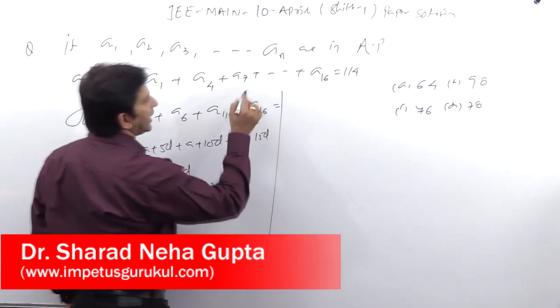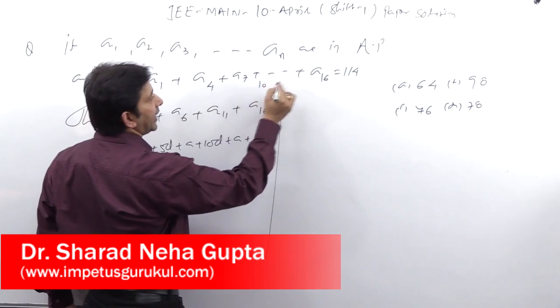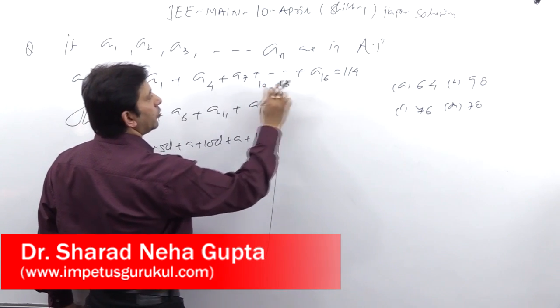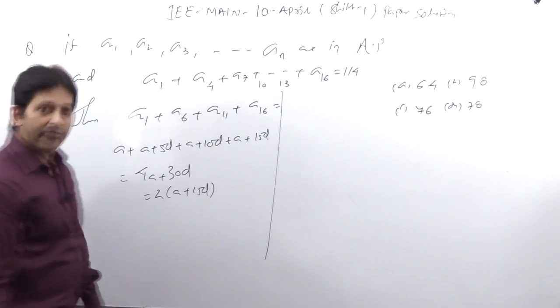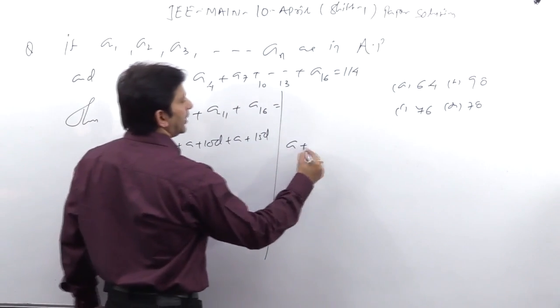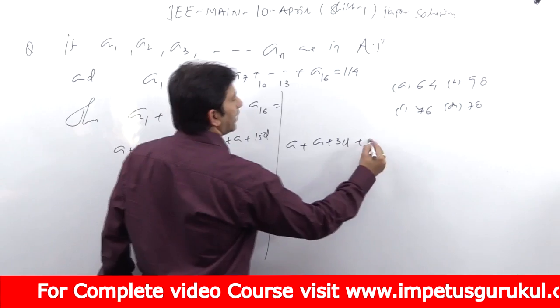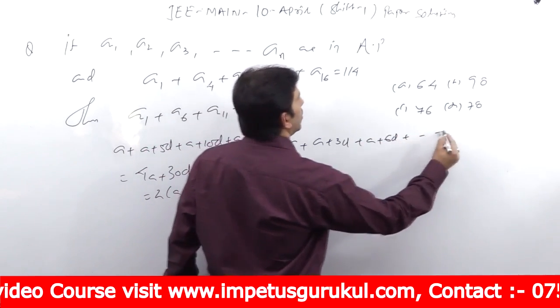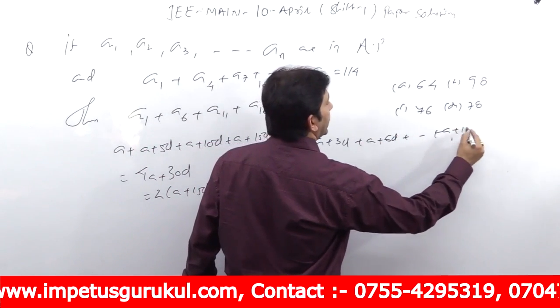Now obviously A plus 15D is going to be found because A1 means, you can see here total terms 10, 13, 16, 1, 2, 3, 4, 5, 6. This term is directly we will see A, A plus 3D, then A plus 6D, up to A plus 15D.